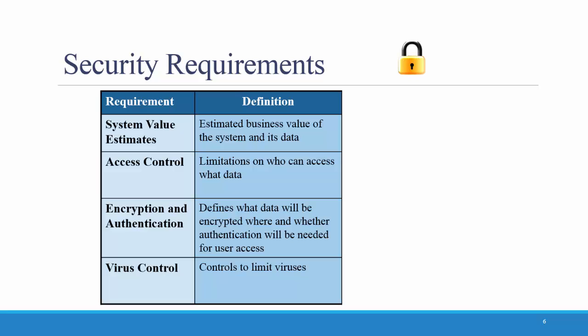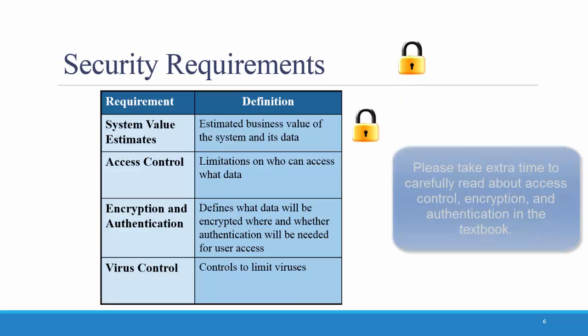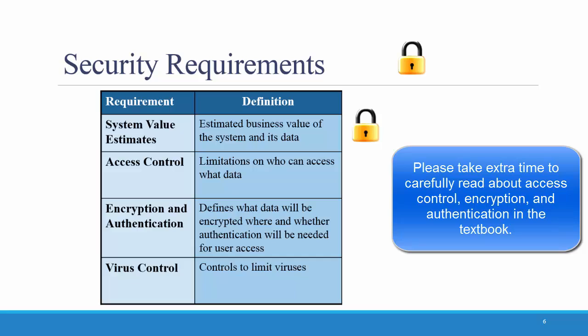Next is security. The first category of security is system value estimates, meaning that you should estimate the business value of the system and its data. For example: A complete loss of all of our system data would cost $20 million. Second is access control, which involves limitations on who can access what data. An example could be: Inventory item changes can be made only by managers for items in their own department.